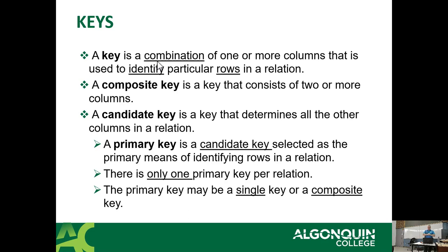A key is a combination of one or more columns used to identify a particular row in a table. A composite key is a key that consists of two or more columns. For example, going back to identifying a student before student numbers existed, a key could have been last name plus phone number, or last name, first name, and phone number — because in theory you could have twins living at the same place with the same last name. That's a composite key — using multiple values to uniquely identify something.